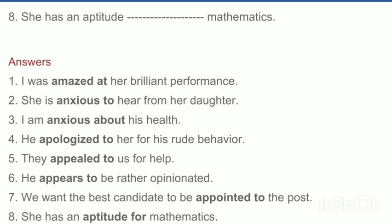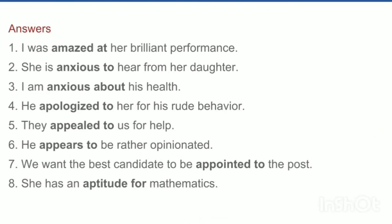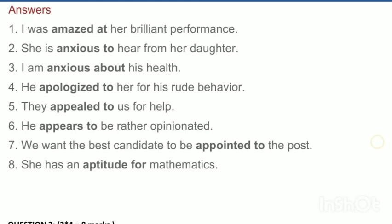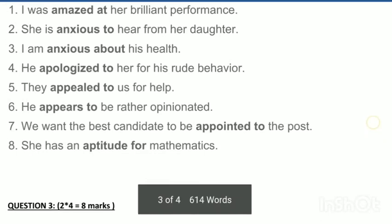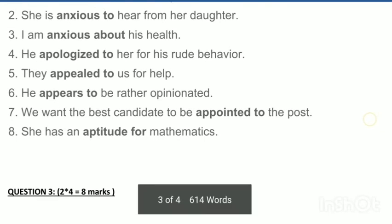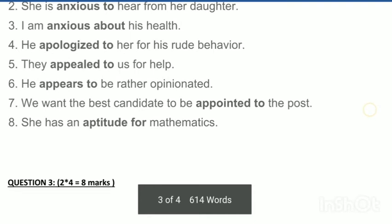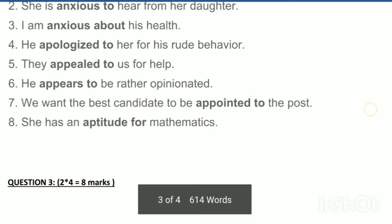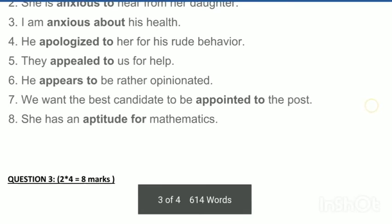Here are the preposition answers: 'I was amazed at...' — we use 'at' with amazed. 'She is anxious to hear from her daughter' — anxious to hear from. 'She is anxious about her daughter's health' — anxious about. 'He apologized to her for his rude behavior.' 'They appealed to us for help.' 'He appears to be rather opinionated.' 'He wants the best candidate to be appointed to the post.' 'She has an aptitude for maths.'